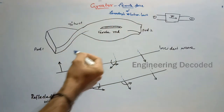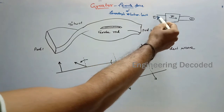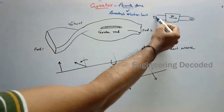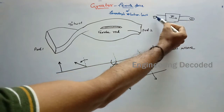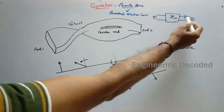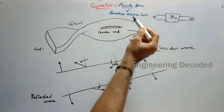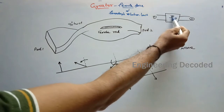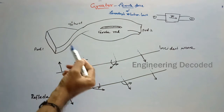The Gyrator can transmit a signal from port 1 to port 2. When a signal is passed from port 1 to port 2, the signal will be shifted by 180 degrees at port 2. That is the concept of a Gyrator — a signal passed at port 1 will be 180 degrees shifted and that shifted output will be received at port 2.